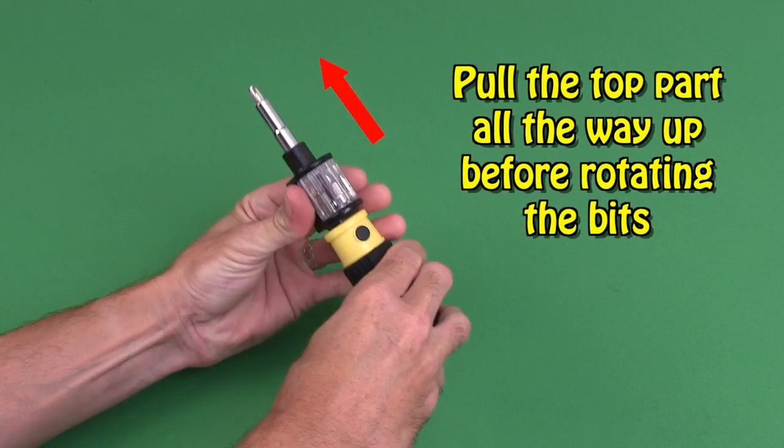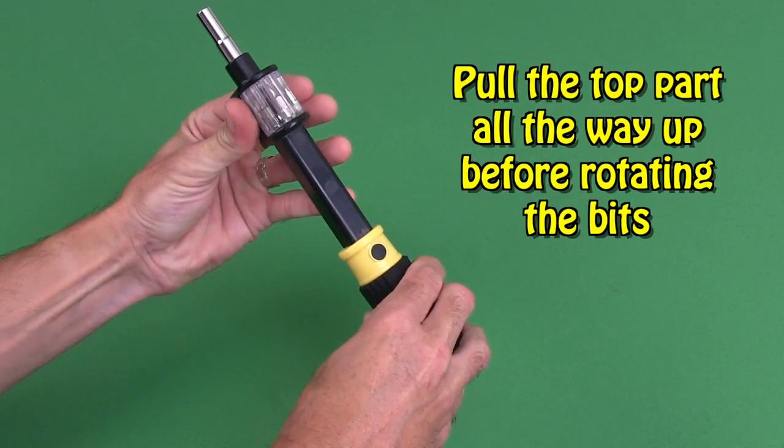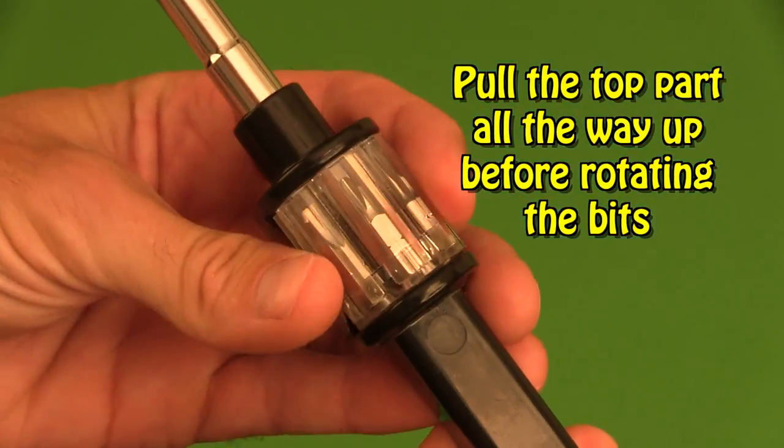Be sure to pull the top part of the handle of the Bit360 all the way up before trying to rotate the Bit360.